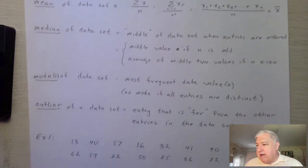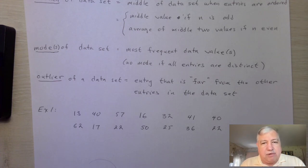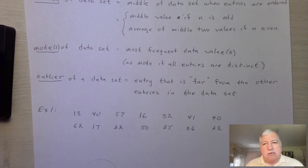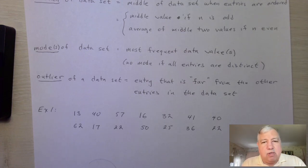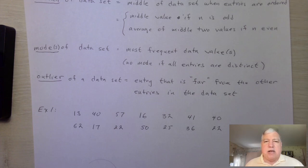We also have the idea of an outlier. An outlier is just an entry that is far from the other entries in the data set. We'll give the technical definition and classification of an outlier later on, but right now we can see that an outlier is going to change the mean a lot. It might not change the median that much — we'll see that later.